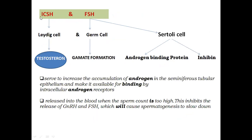So here is the flow chart summary: both hormones are secreted from the anterior lobe of the pituitary gland. ICSH stimulates the Leydig cells to produce testosterone. FSH stimulates the Sertoli cells.